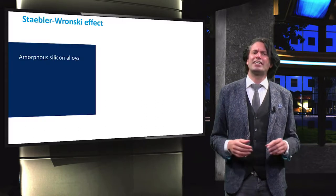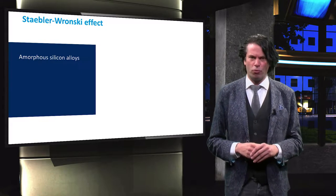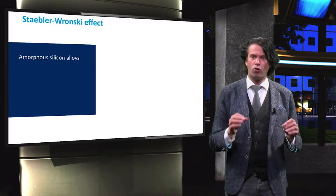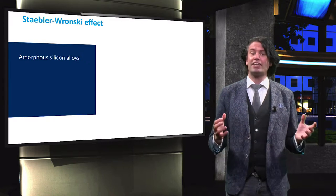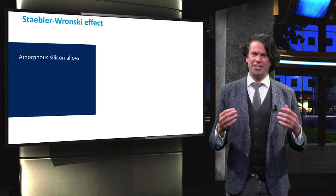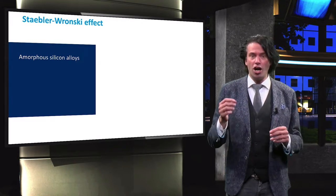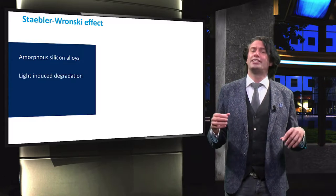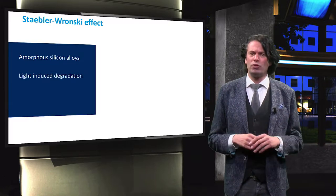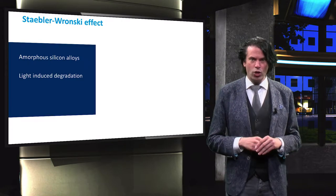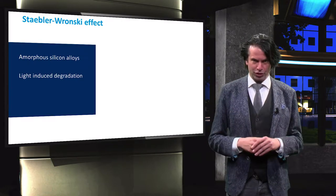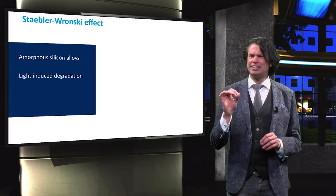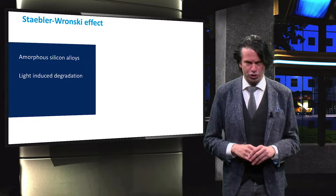The Staebler-Wronski effect influences the performance of amorphous silicon and silicon alloys containing amorphous tissue. The effect involves the degradation of amorphous silicon under the influence of light. Light-induced degradation was discovered by Staebler and Wronski one year after the first amorphous silicon solar cells were made, and is one of the biggest challenges for thin film solar cells.